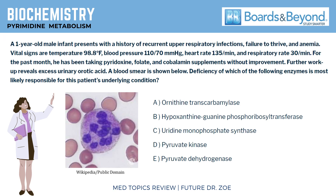The answer is C, Uridine monophosphate synthase. Now let's talk about the rationalization behind the answer. UMP synthase deficiency, also called orotic aciduria, presents in infancy with failure to thrive, recurrent infections, and megaloblastic anemia.